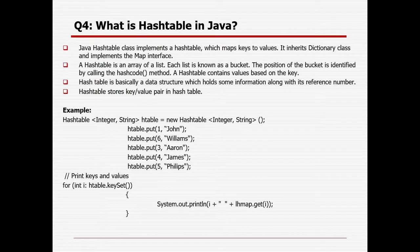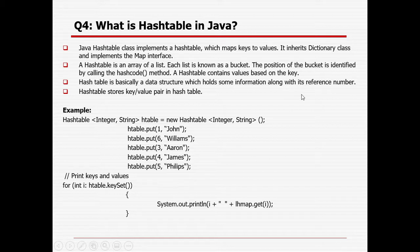What is HashTable in Java? Java HashTable class implements a hash table which maps keys to values, inherits the Dictionary class, and implements the map interface. A HashTable is an array of lists — each list is known as a bucket. The position of the bucket is identified by calling the hashCode method. HashTable contains values based on keys. Similar to HashMap, the syntax uses HashTable with keys and values, and the put method adds objects where keys should be unique and values can be duplicate. HashTable is a data structure that holds information along with reference numbers.